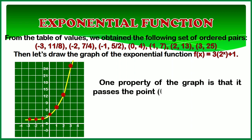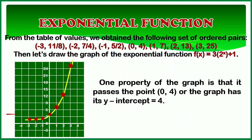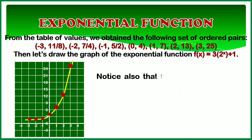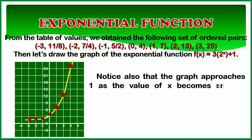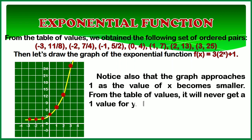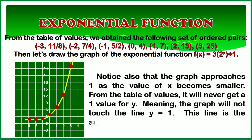One property of the graph is that it passes the point 0 and 4, or the graph has its y-intercept equal to 4. Notice also that the graph approaches 1 as the value of x becomes smaller. From the table of values, it will never get a 1 value for y, meaning the graph will not touch the line y equals 1. This line is the asymptote.